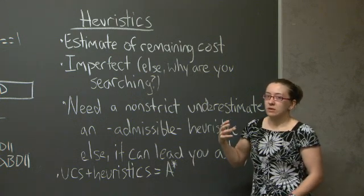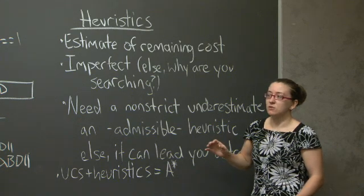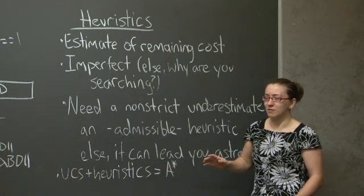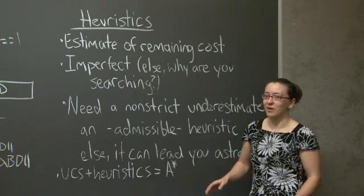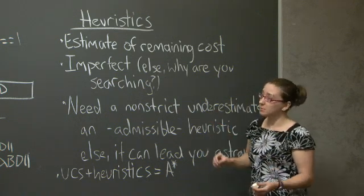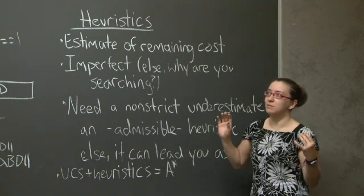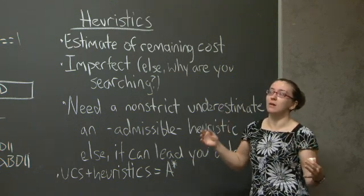In particular, you probably shouldn't be using a heuristic if you know it's perfect. Because if you know the heuristic is perfect, then you should be using the heuristic to solve your problems instead of doing search in the first place. Or if the heuristic already tells you how long it's going to take to find something, then it probably also has the path that represents that amount of cost.